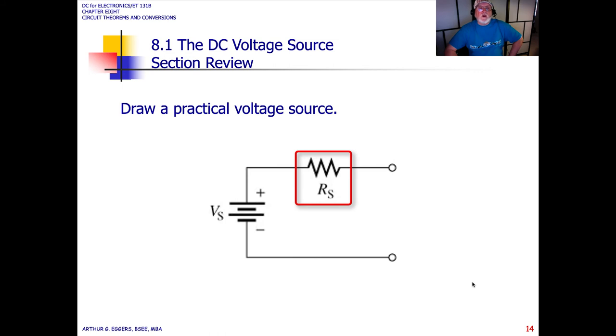If we draw a practical voltage source, it's actually going to look like this because it has some internal resistance. Even your battery—you think that a battery doesn't have resistance in it? Next time you have your flashlight and the batteries are starting to die but you can still get a little light on it, take the batteries out and switch them around. Switch the one in front of the other and put it back together.